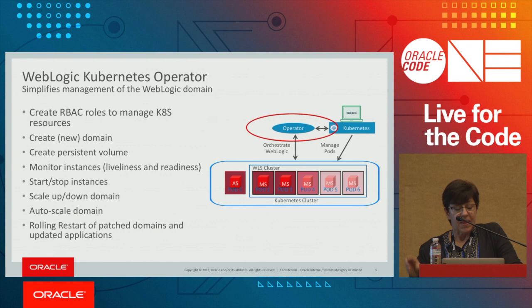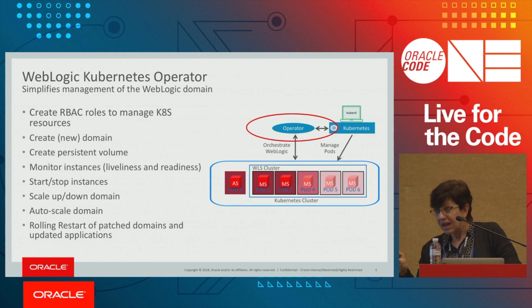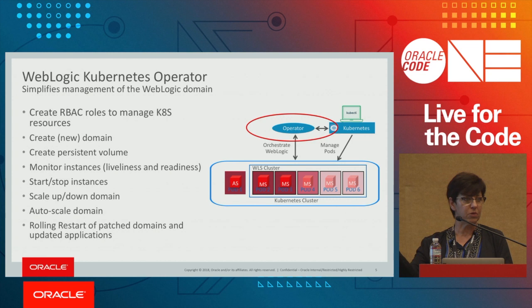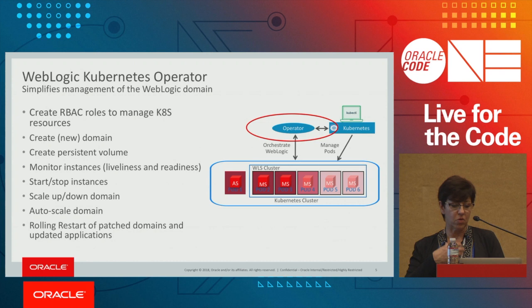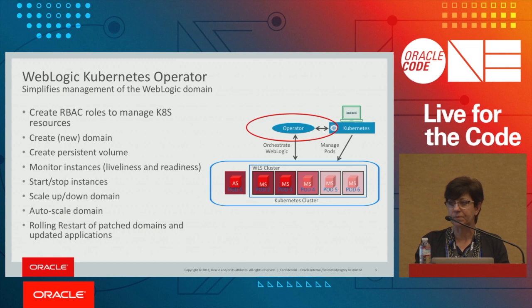The operator monitors WebLogic servers with a liveness probe and a readiness probe. The liveness probe checks server health, and if a server is unhealthy, it invokes the appropriate Kubernetes API to restart that pod. The readiness probe ensures that when a managed server is ready to receive traffic, the load balancer is opened to route traffic to the application.